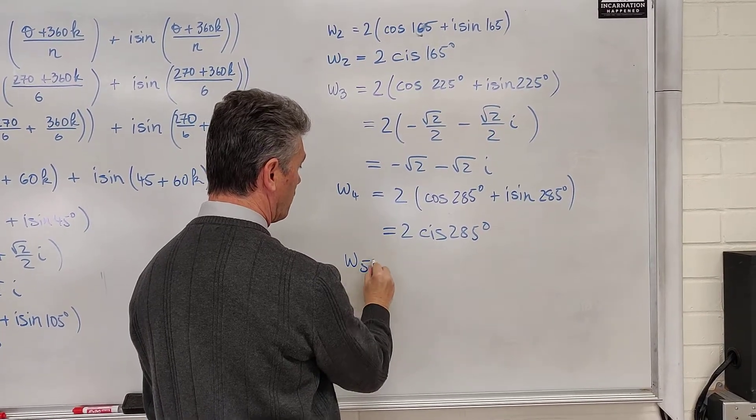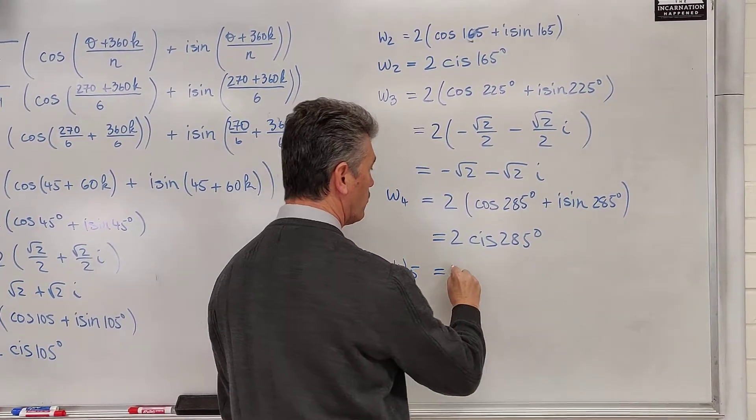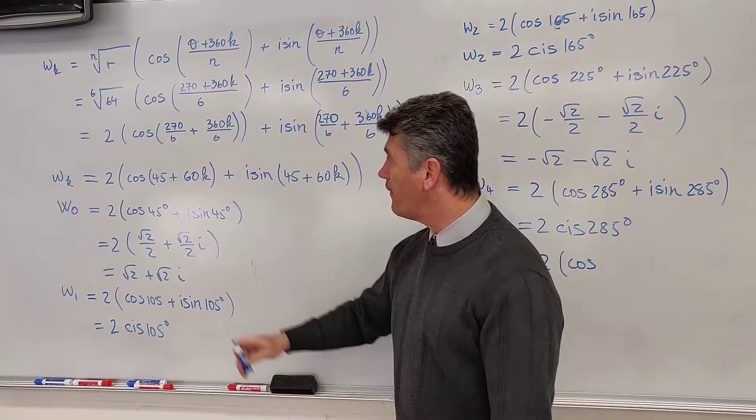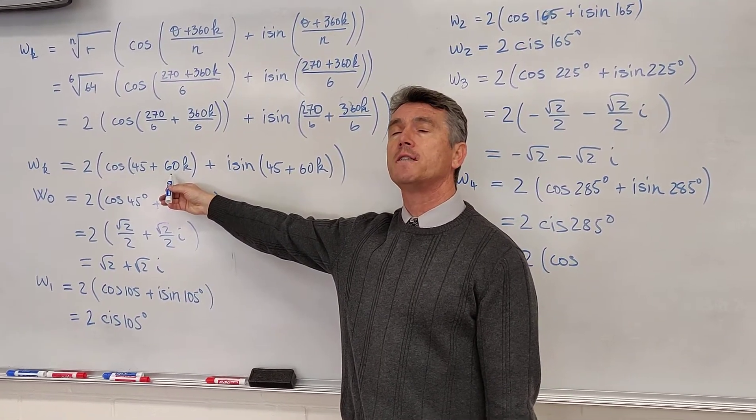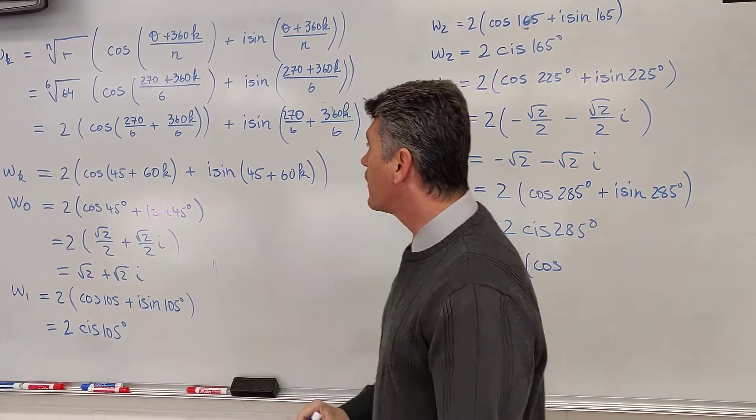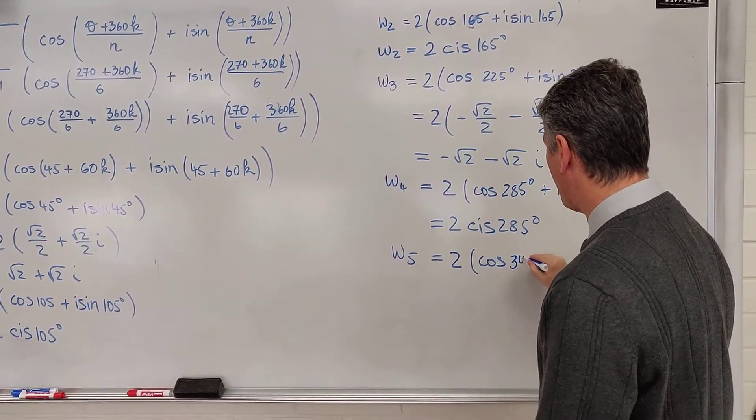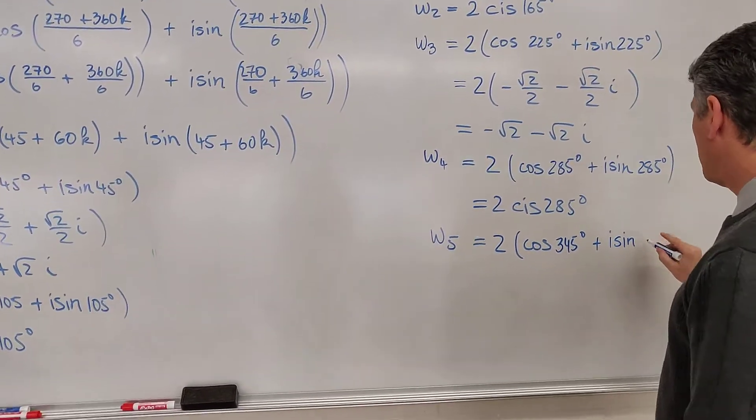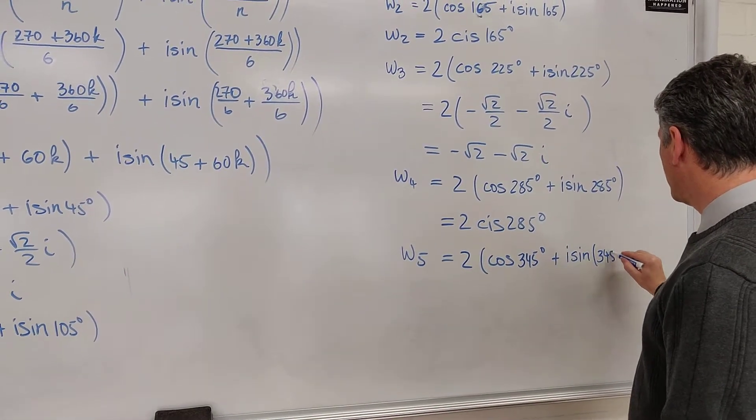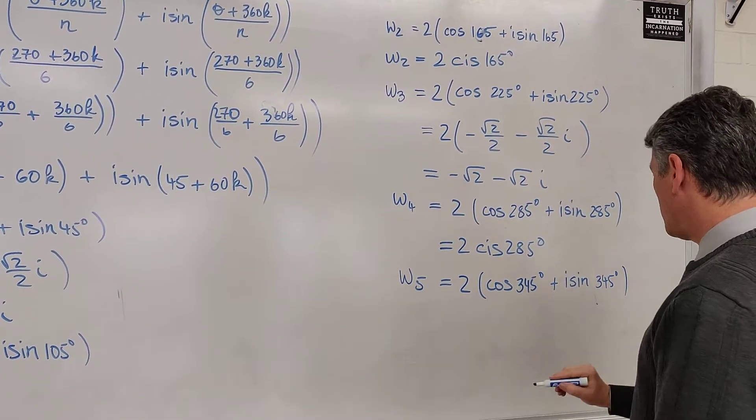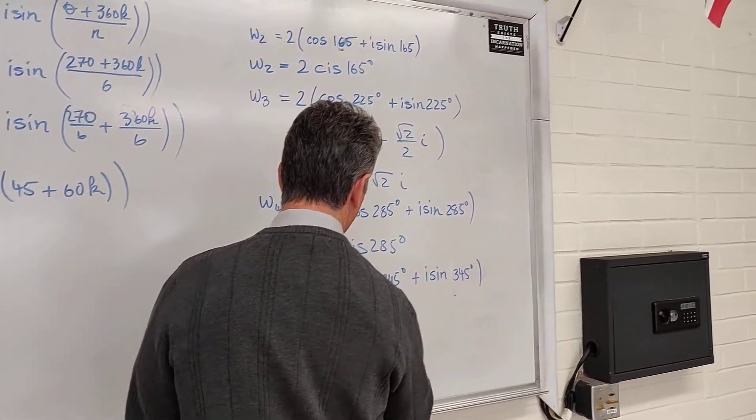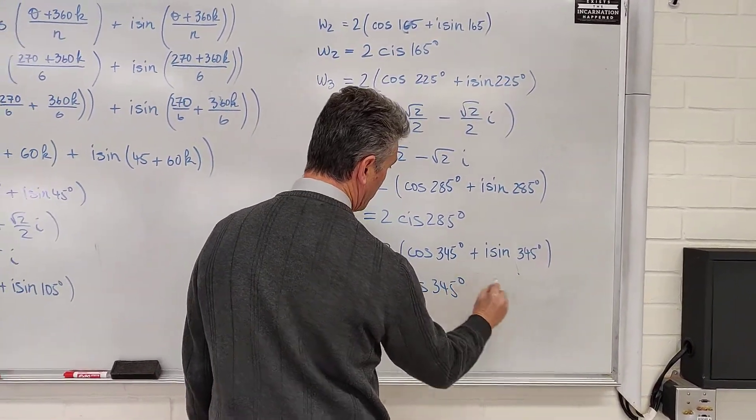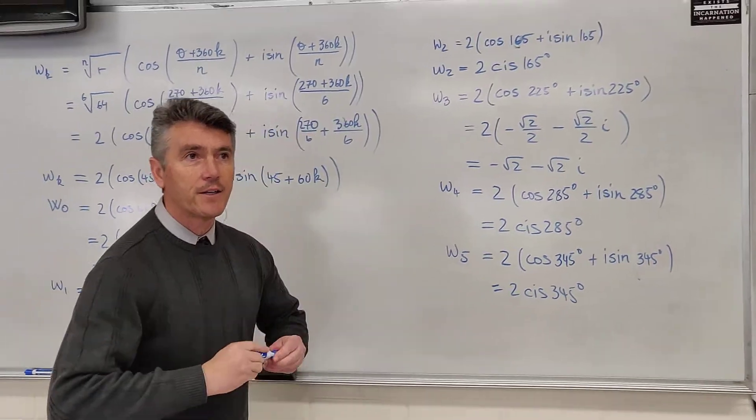The sixth and final root, w sub 5, is equal to 2 times cosine of 345 plus i sine of 345. So, replace k by 5. 60 times 5 is 300, plus 45 is 345. This gives us a reference angle of 15 degrees. So, we're going to leave the answer in the form 2 cis 345 degrees. And that concludes the lesson.